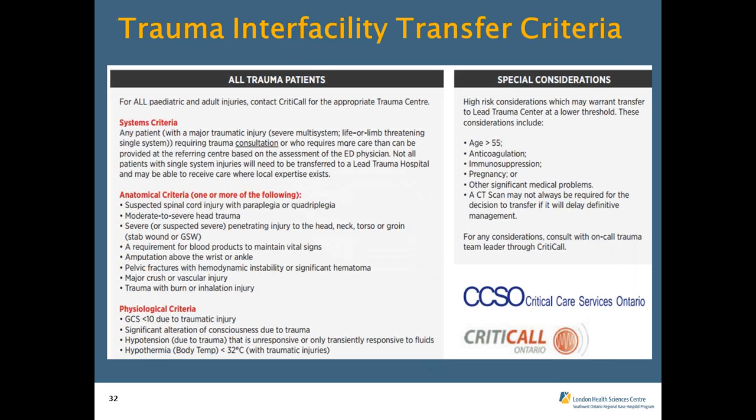A good example: a physician at a local ED recognizes a significant injury, the patient isn't unstable by Step 1 or Step 2, but they have an injury requiring a CT scan — perhaps significant left upper quadrant pain with stable vitals suggesting a ruptured spleen. By the trauma inter-facility transfer criteria, that patient may require more care than the referring center can provide, based on the ED physician's assessment — therefore it needs to go. That's exactly why a paramedic might have to transport that same patient back out to the lead trauma hospital for investigations.